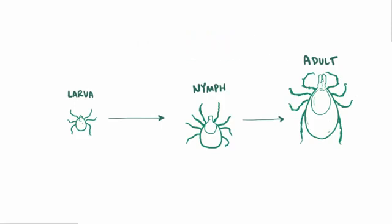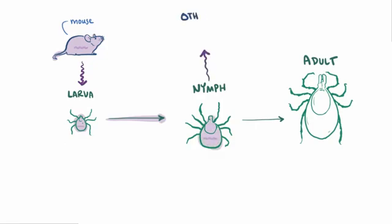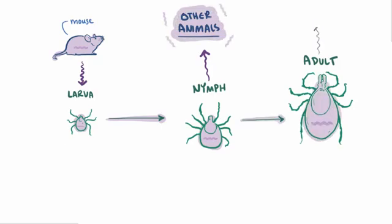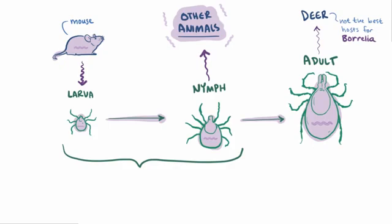The larval tick will most likely acquire the bacteria while feeding on something like a mouse, since deer ticks in the larval stage prefer smaller animals. After larval deer ticks molt to the nymphal stage, they feed on a broader range of animals, meaning they can spread the bacteria they picked up to new reservoirs. Since the larval and nymphal deer ticks spread Borrelia to more suitable hosts, these two stages are very important for Borrelia.